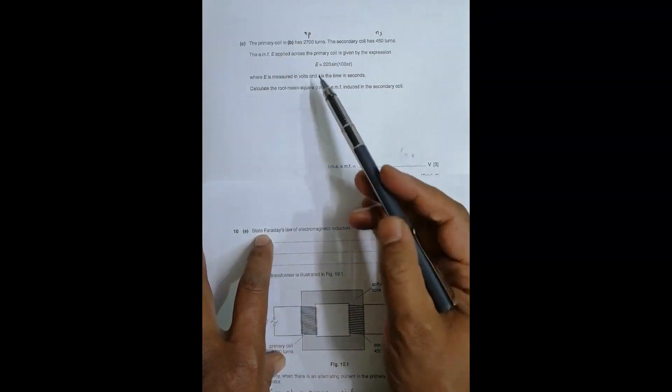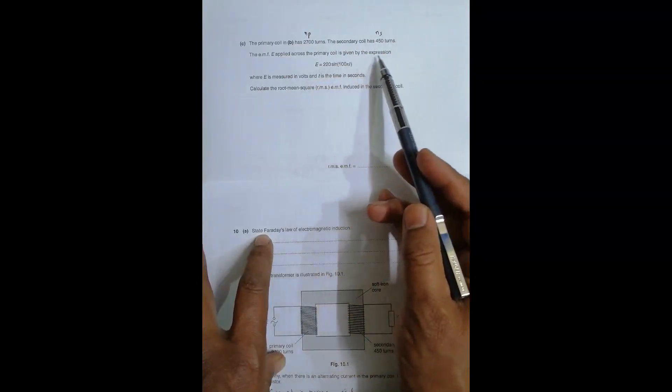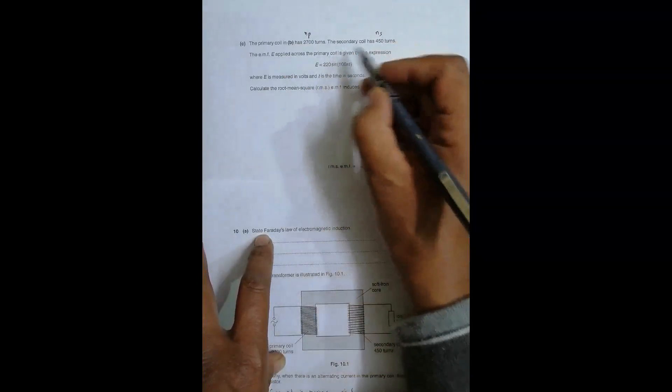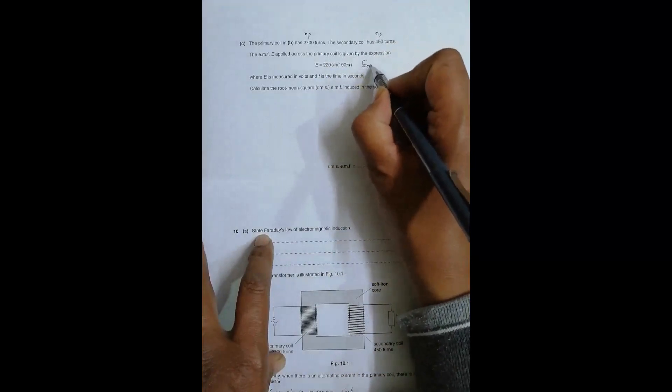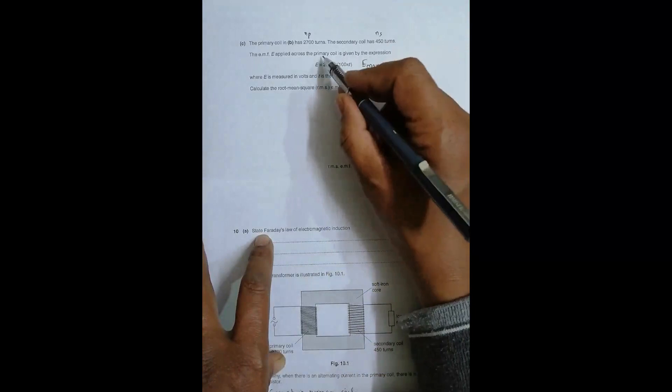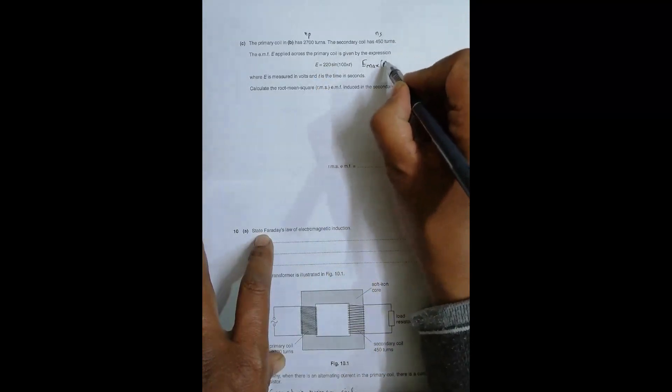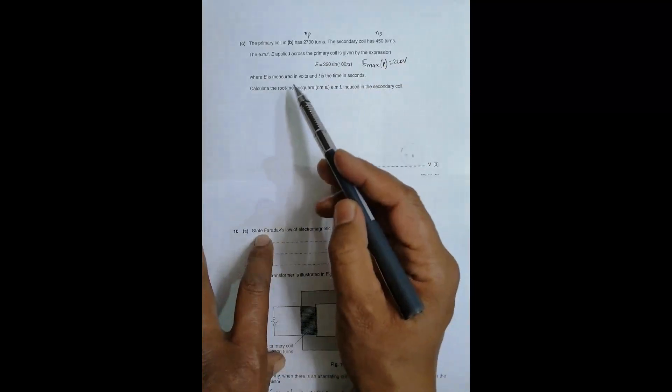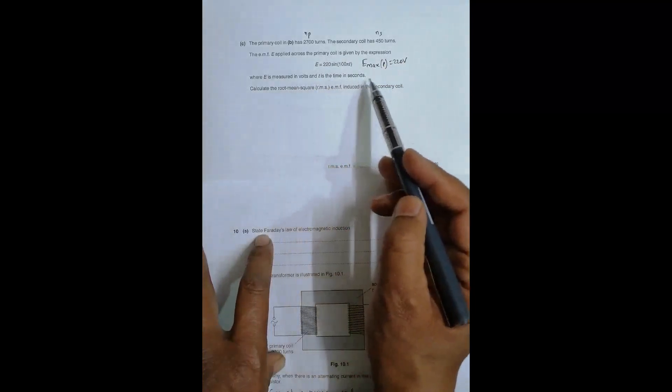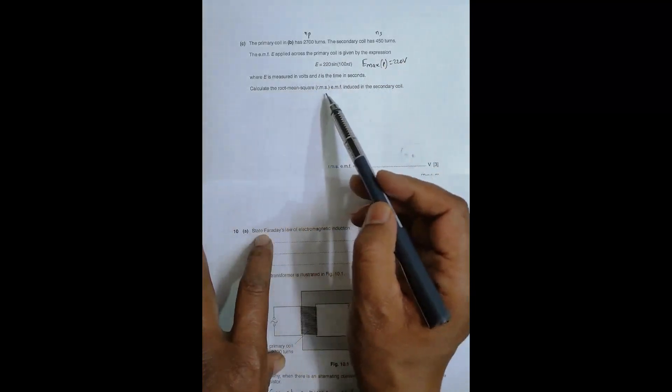The EMF E applied across the primary coil is given by the expression: 200 volts equals E_max for primary, and that equals 220 volts, where E is measured in volts and t is time in seconds. Find the root mean square EMF induced in the secondary coil.